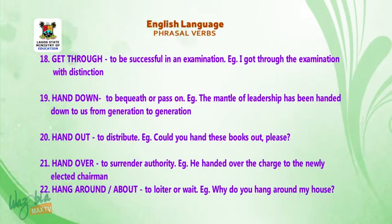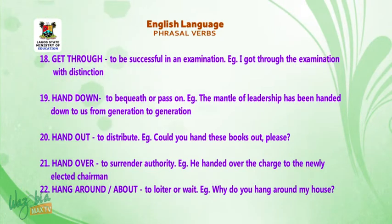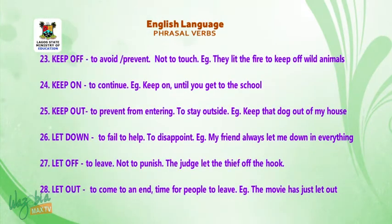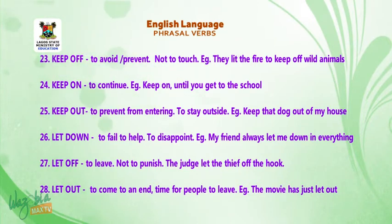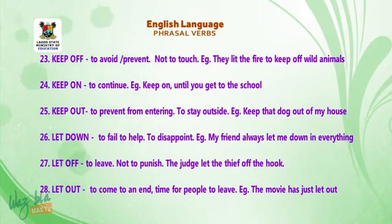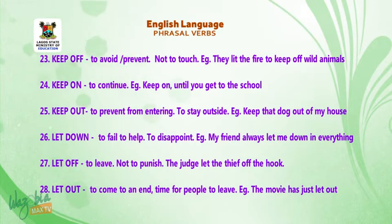'Hand over' means to surrender authority. E.g., he handed over the charge to the newly elected chairman. 'Hang around' or 'hang about' means to loiter or wait. E.g., why do you hang around my house? 'Keep off' means to avoid or prevent — it can also mean not to touch. E.g., keep fires to keep off wild animals. 'Keep on' means to continue.